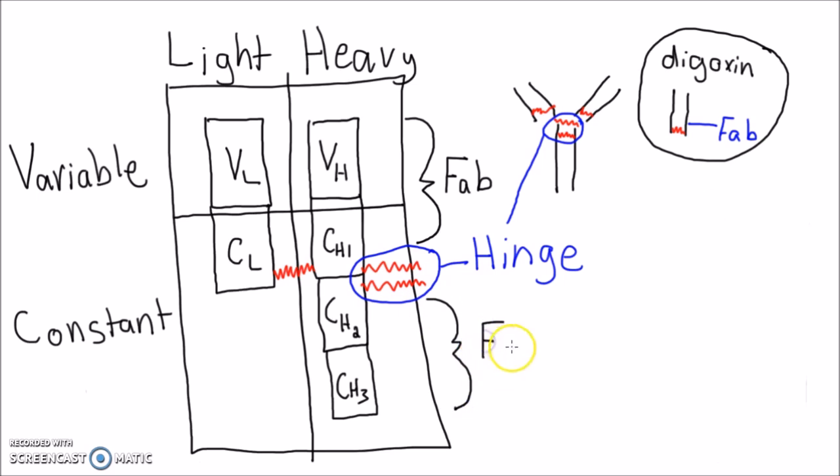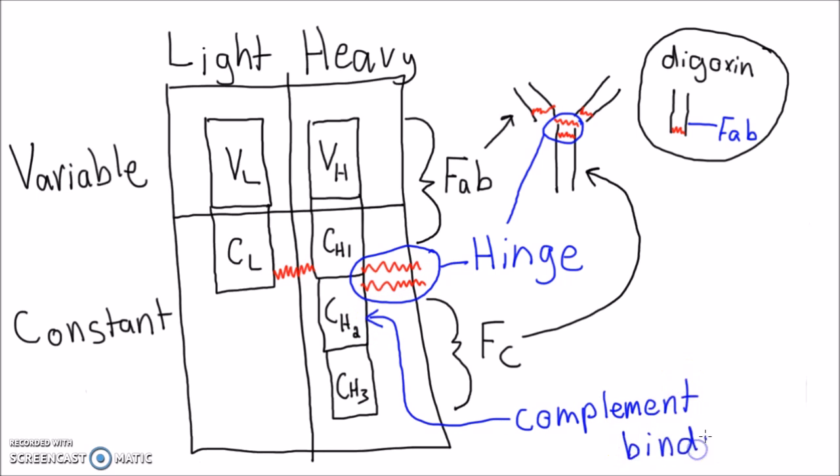CH2 and CH3 together make up the Fc region of the antibody, which corresponds to the stock of the Y. CH2 has the special property of binding to complement, something I will cover in a future video.